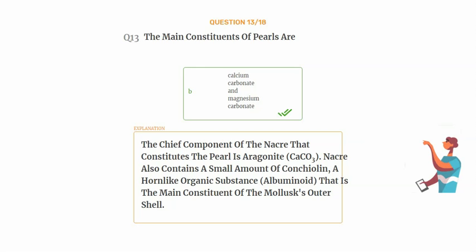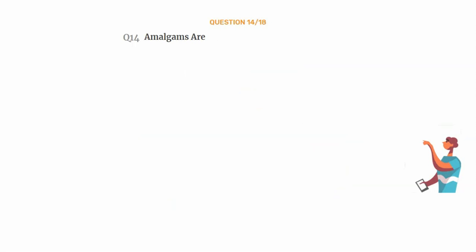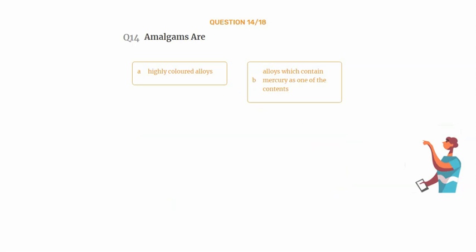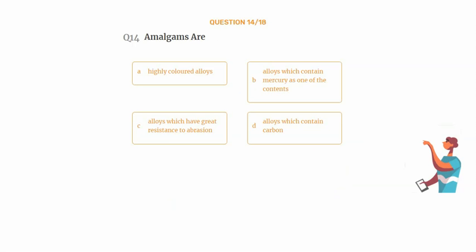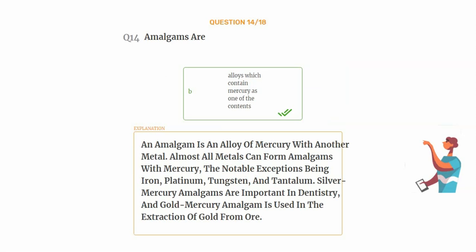Question number fourteen: amalgams are — option A: highly colored alloys, option B: alloys which contain mercury as one of the contents, option C: alloys which have great resistance to abrasion, option D: alloys which contain carbon. The correct answer is option B: alloys which contain mercury. An amalgam is an alloy of mercury with another metal. Almost all metals can form amalgams with mercury, with notable exceptions being iron, platinum, tungsten, and tantalum. Silver-mercury amalgams are important in dentistry, and gold-mercury amalgam is used in the extraction of gold from ore.